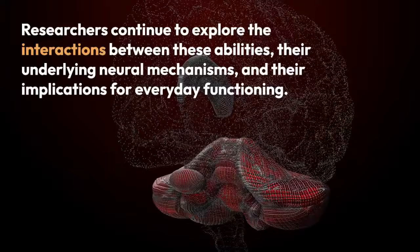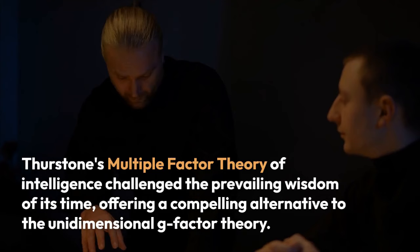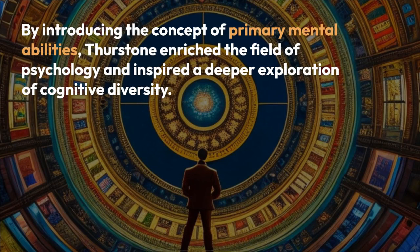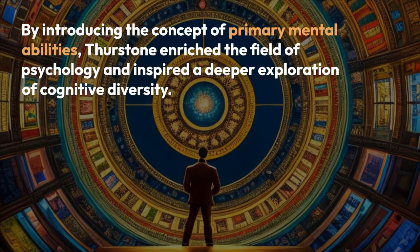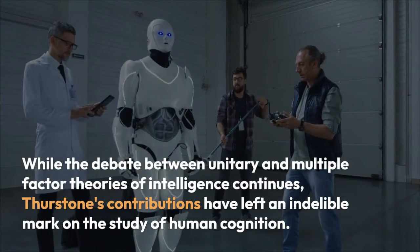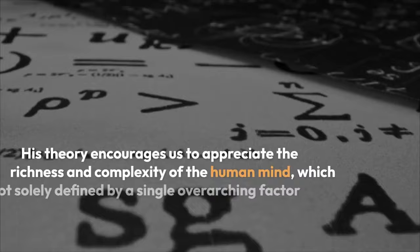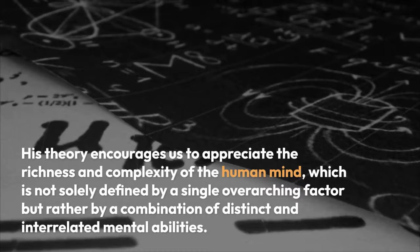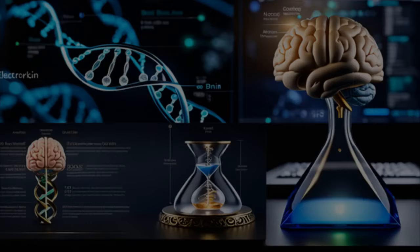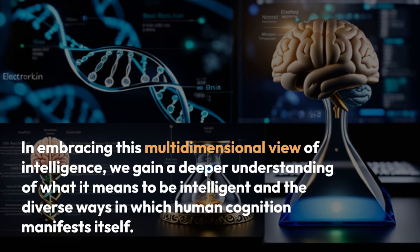Conclusion: A Multidimensional View of Intelligence. Thurstone's multiple-factor theory of intelligence challenged the prevailing wisdom of its time, offering a compelling alternative to the unidimensional G-factor theory. By introducing the concept of primary mental abilities, Thurstone enriched the field of psychology and inspired a deeper exploration of cognitive diversity. While the debate between unitary and multiple-factor theories of intelligence continues, Thurstone's contributions have left an indelible mark on the study of human cognition. His theory encourages us to appreciate the richness and complexity of the human mind, which is not solely defined by a single overarching factor, but rather by a combination of distinct and interrelated mental abilities. In embracing this multidimensional view of intelligence, we gain a deeper understanding of what it means to be intelligent, and the diverse ways in which human cognition manifests itself.